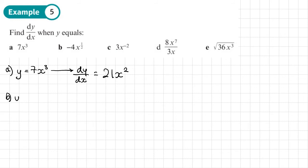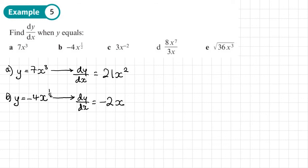Part b: y equals negative 4x to the power one half. We write dy dx. Multiply one half by negative 4 to get negative 2x, then take 1 away from the power, giving dy dx equals negative 2x to the power negative one half.